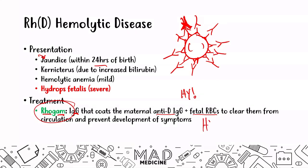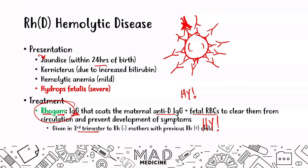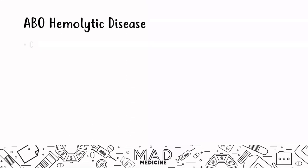RhoGAM is an antibody given to prevent maternal antibodies from binding to fetal red blood cells. It is usually given in the third trimester to RH negative mothers who have already had an RH positive child. In any subsequent pregnancies, those mothers must be given RhoGAM in the third trimester.